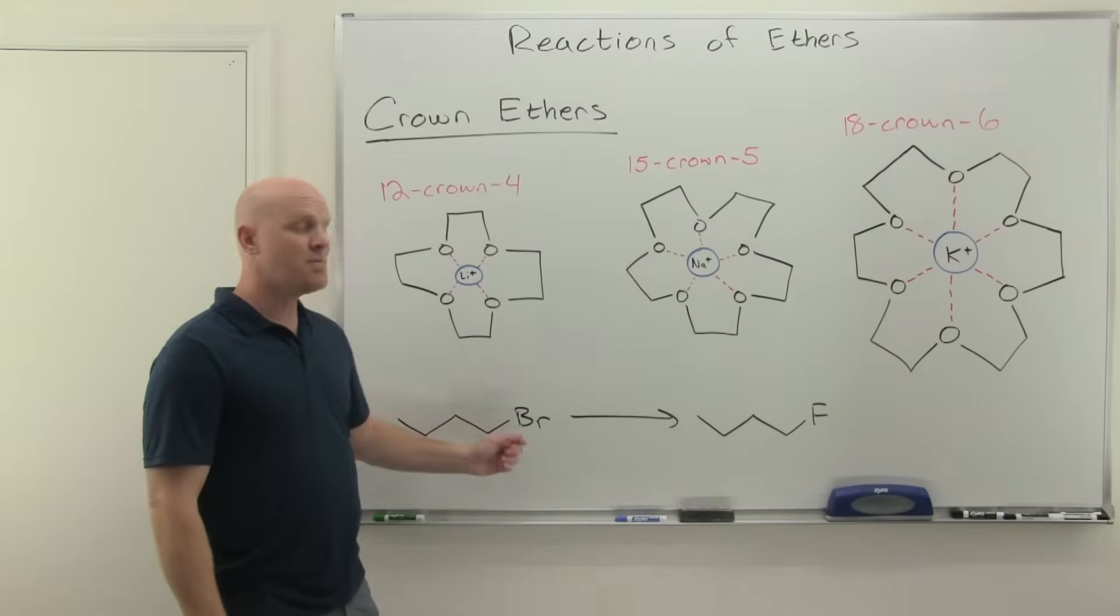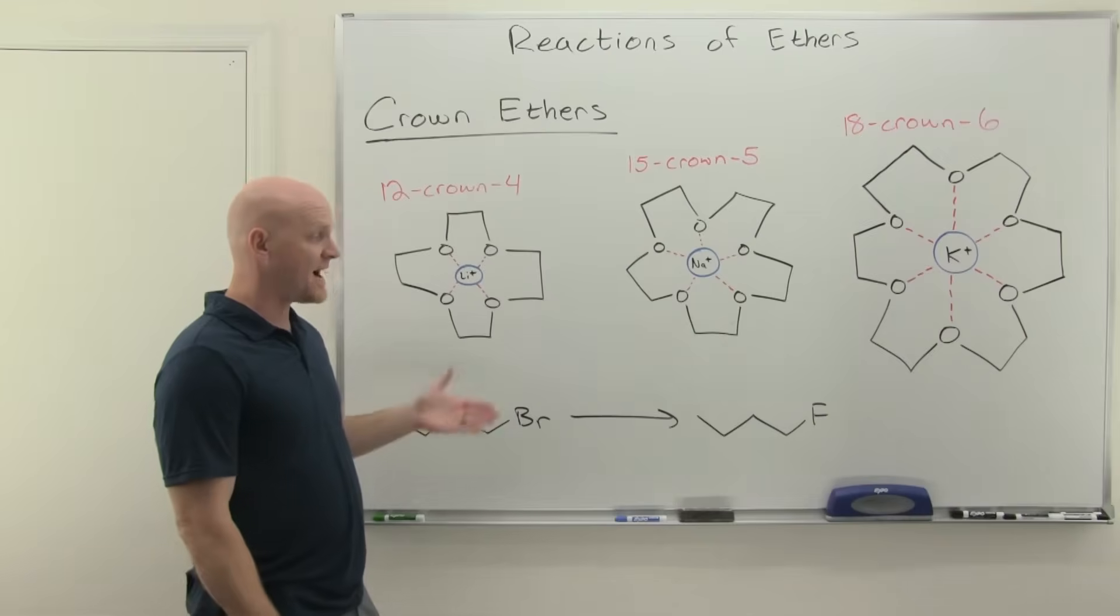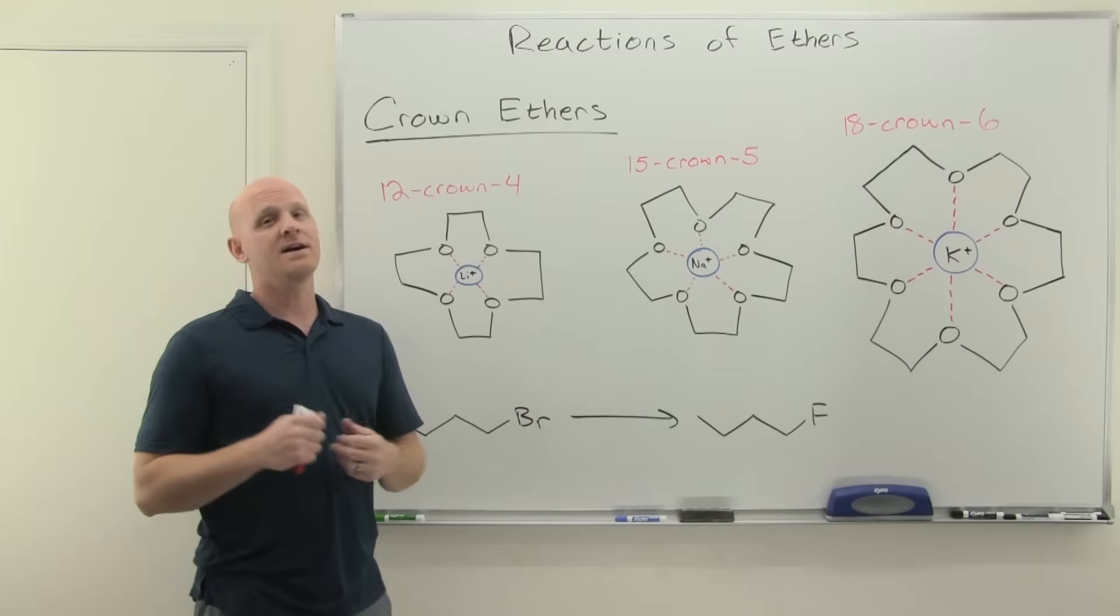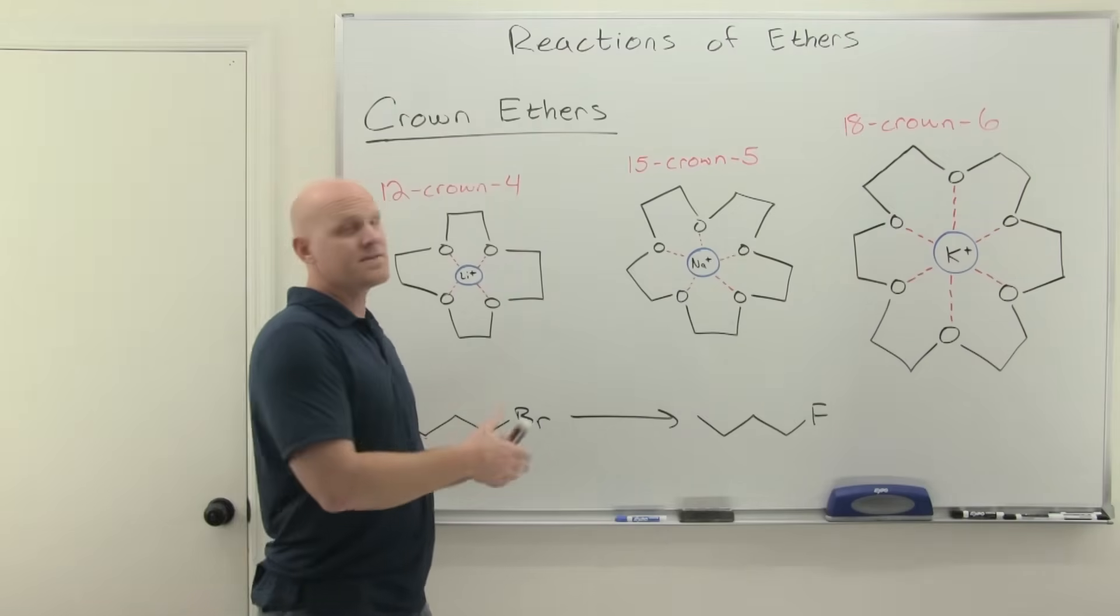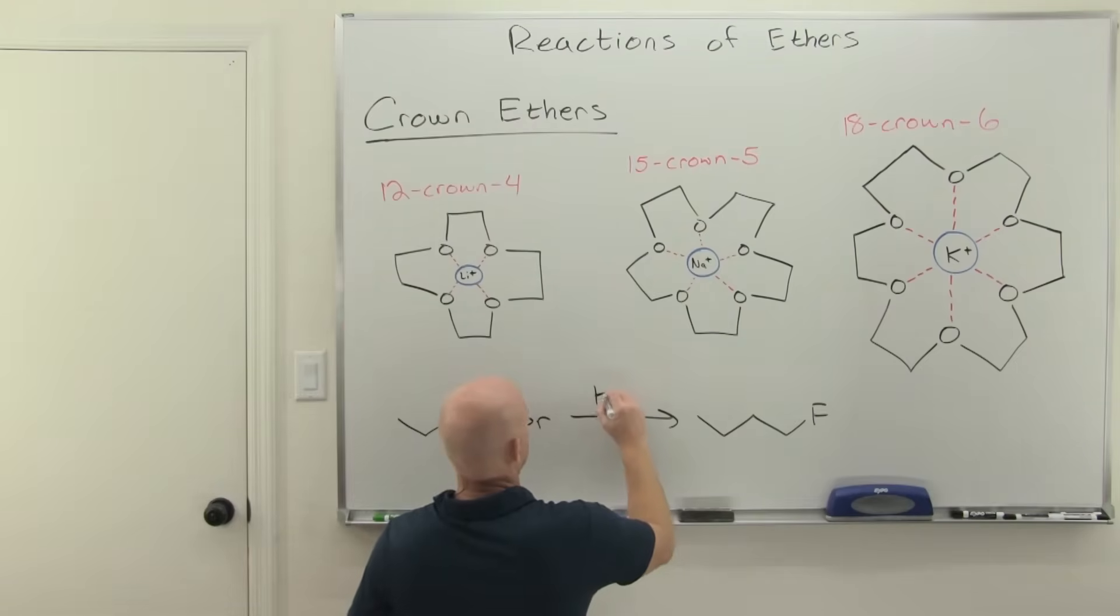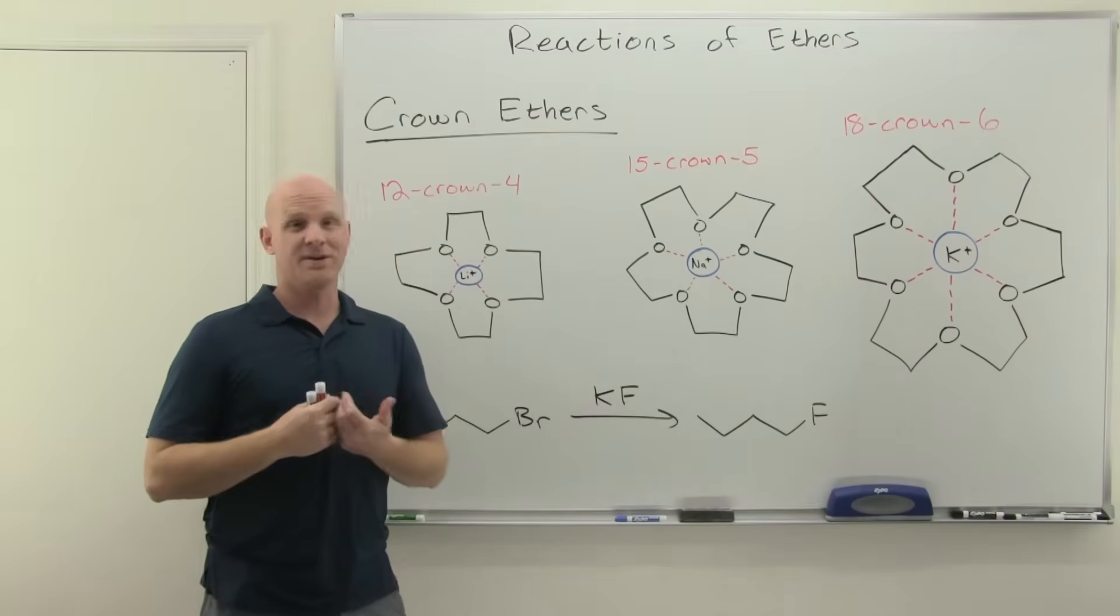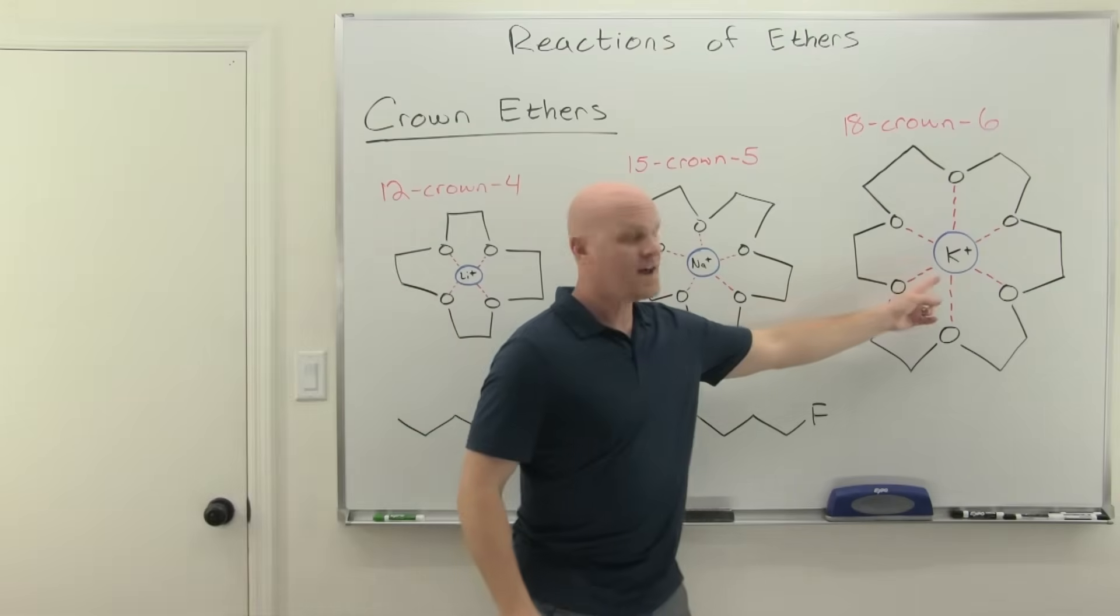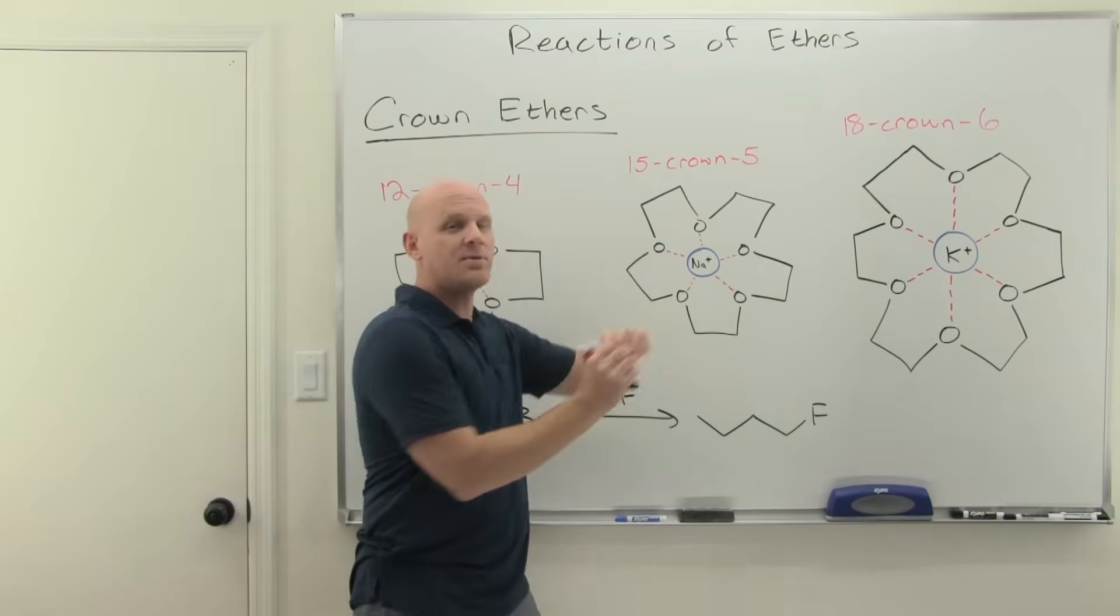We want to replace the bromide on a primary halide with a fluoride. The problem is this alkyl bromide is not the most polar thing in the world, so we're using a fairly low polarity solvent. The problem is that fluoride salts, being ionic, aren't going to be the most soluble in low polarity solvents. We've got to make them soluble.